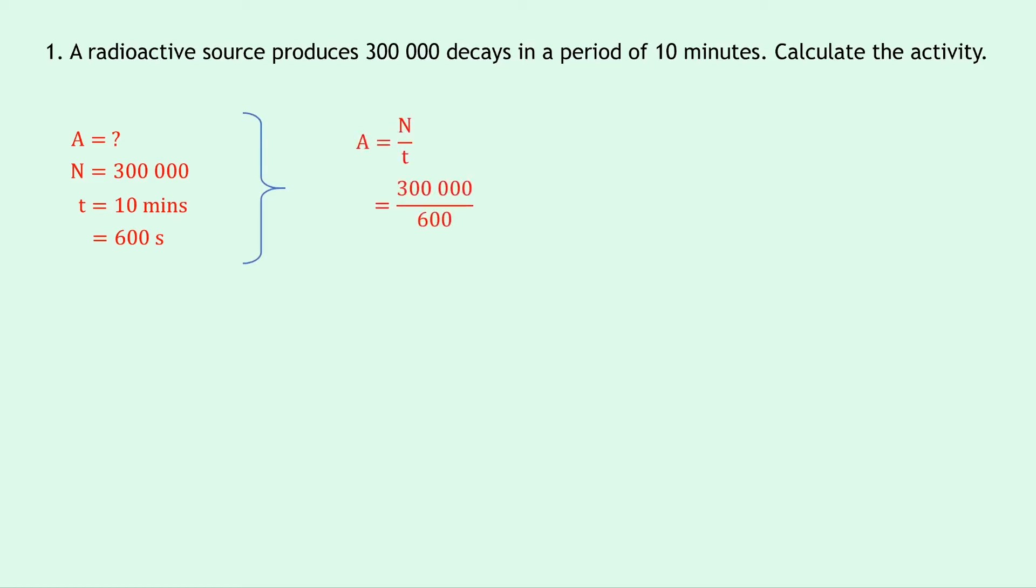Substituting in the numbers gives us 300,000 divided by 600 and if you put that into your calculator we should get an answer of 500 becquerels.